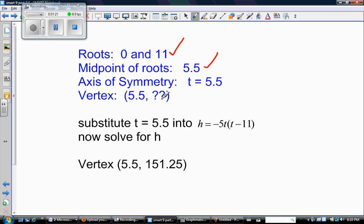So how do we find that thing? Well, we take t equals 5.5 and we sub it into the equation for wherever t exists. And then we solved for h. And this is what we got, a vertex of 5.5 and 151.25.